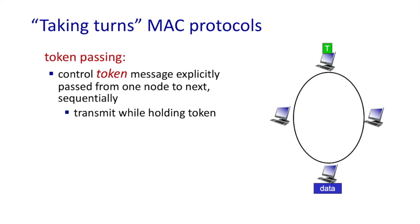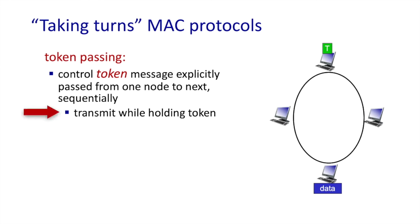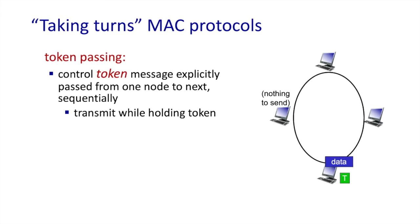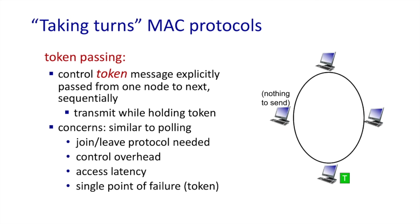In token passing, nodes are typically arranged in a ring topology, and a control token message is explicitly passed from one node to the next. If you're holding the token, it's your turn to transmit. When you're done or have nothing to send, you pass the token to the next node. In this example, node 1 has nothing to send and immediately passes the token to node 2; node 2 holds the token, transmits, then passes it on. Token passing has similar trade-offs to polling: join/leave protocol needed, some control overhead, some access latency, and the token represents a single point of failure.